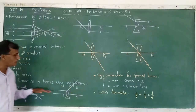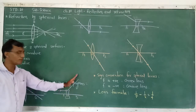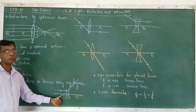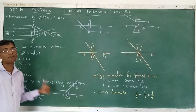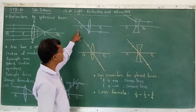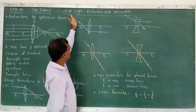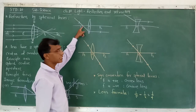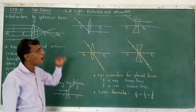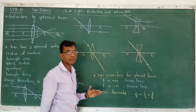Second, a ray passing through the principal focus F1 of a convex lens, after refraction, emerges parallel to the principal axis. For a concave lens, a ray directed toward the principal focus on the other side emerges parallel to the principal axis after refraction.